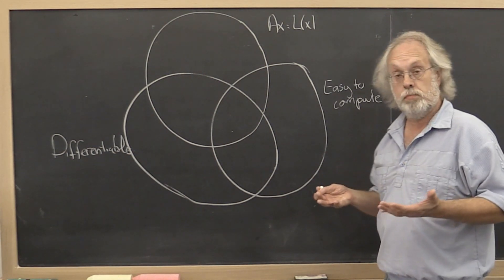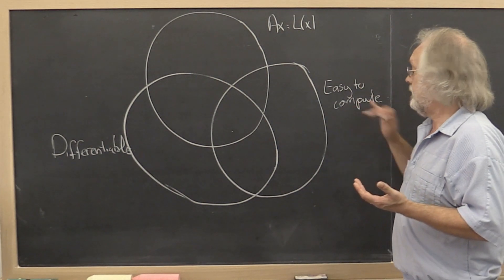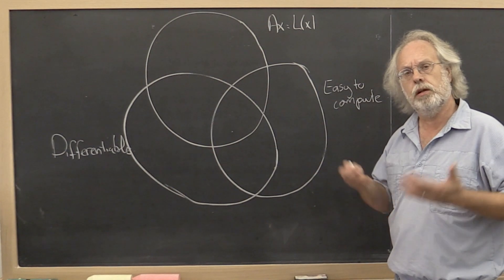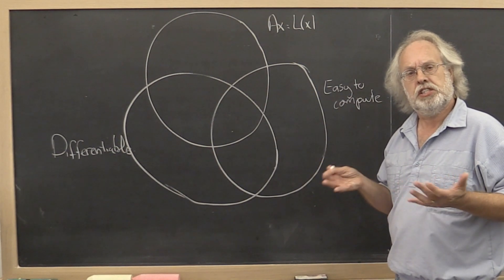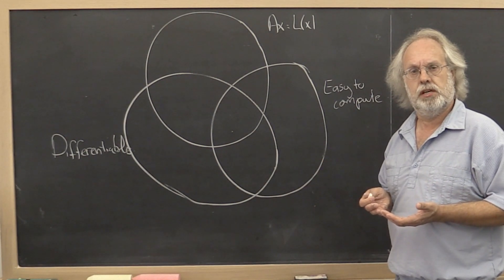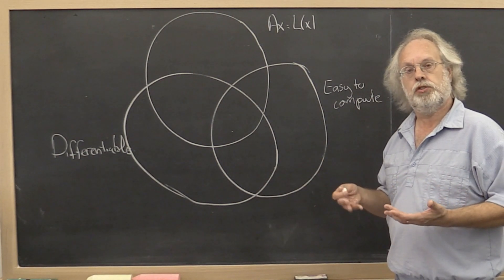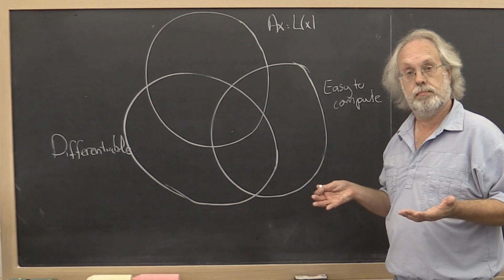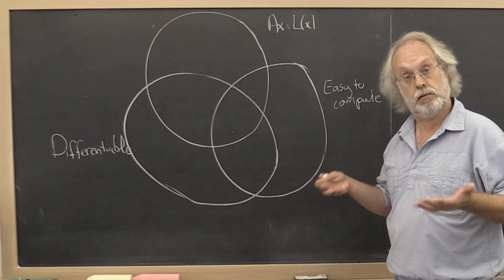There are other norms that are merely easy to compute. What do we mean by easy to compute? Well, a matrix is typically an m by n array of entries. It would be nice to be able to compute its magnitude in order m times n time, or m times n computations.